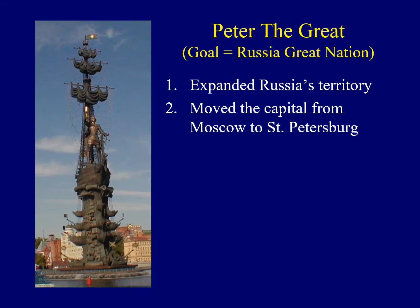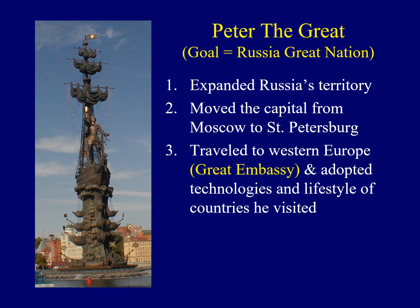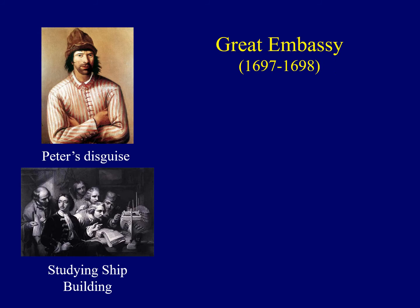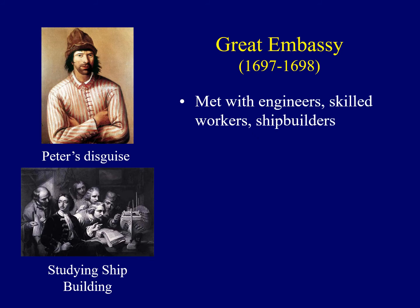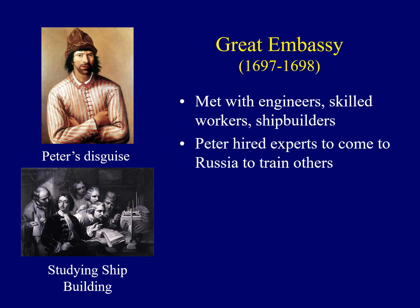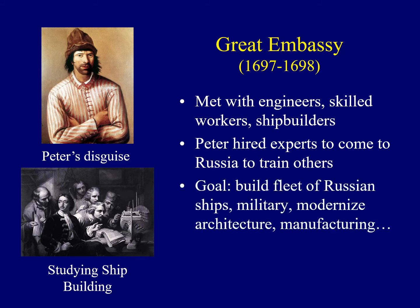The last step Peter took to try to make Russia a great nation was that he traveled to Europe in what was called the Great Embassy — about 200 of his closest advisors who went with him to many different European cities, trying to learn more and potentially adopt the technologies of the different countries he visited. Peter wanted to travel in disguise, so he disguised himself as a sailor. He met with engineers and skilled artisans and was particularly interested in shipbuilding, wanting to hire experts to come back to Russia or train the Russians to build their own items.